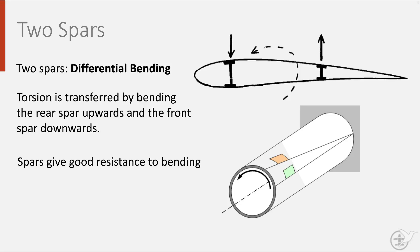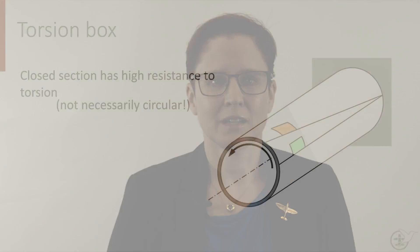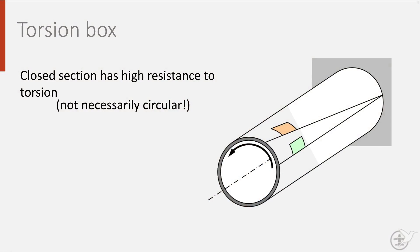To take up torsion, a torsion box must be formed such that the wing skin panels and the spar form a closed cylinder as shown here. A torsion box is a closed section and has a high resistance to bending. It does not necessarily have to be circular, as long as the cross section is closed.